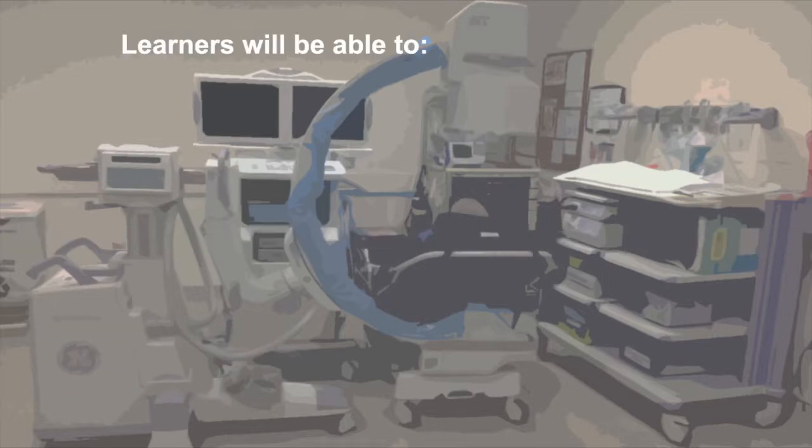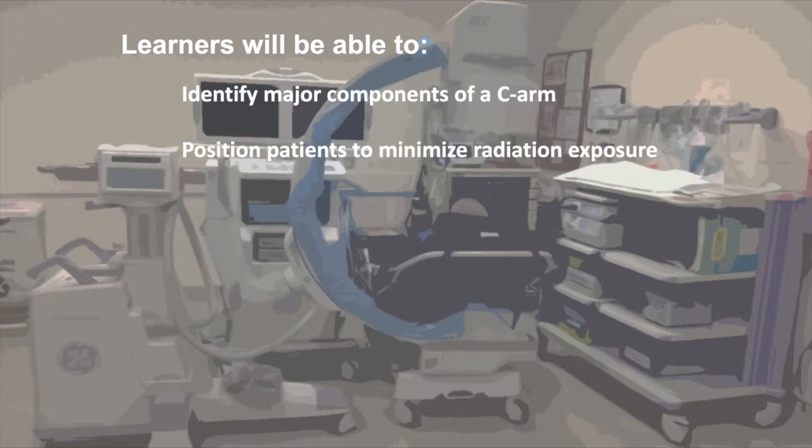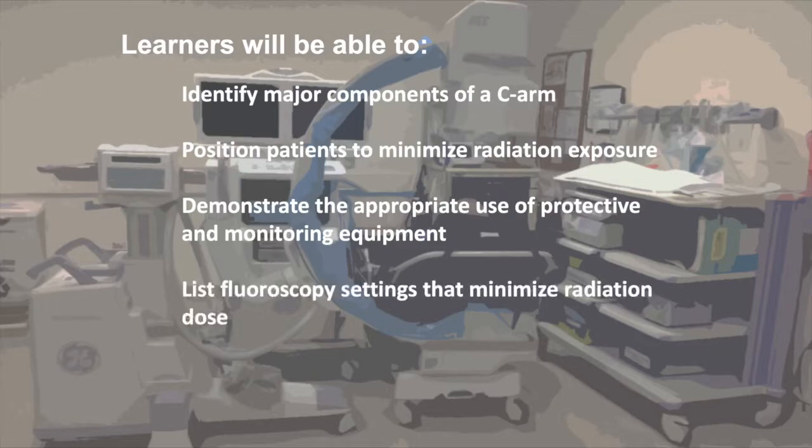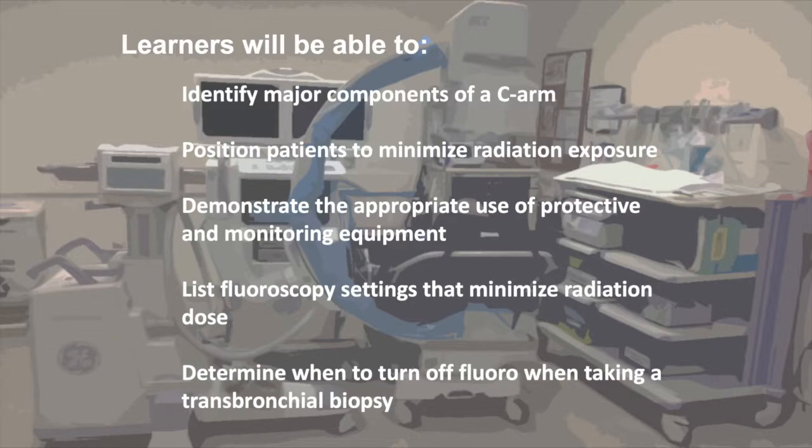By the end of this video, learners will be able to identify the major components of a C-arm, position patients to minimize radiation exposure, demonstrate the appropriate use of protective and monitoring equipment worn by staff, list fluoroscopy settings that minimize radiation dose, and determine when to turn off fluoro when taking a transbronchial biopsy.